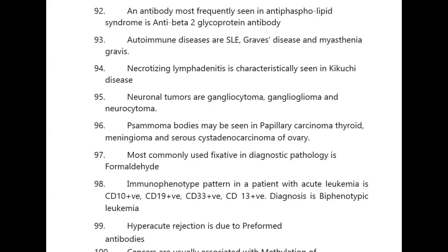The antibody most frequently seen in antiphospholipid syndrome is anti-beta-2-glycoprotein antibody. Autoimmune diseases include SLE, Graves' disease, and myasthenia gravis. Necrotizing lymphadenitis is characteristically seen in Kikuchi syndrome. Neuronal tumors are gangliocytoma, ganglioglioma, and neurocytoma.